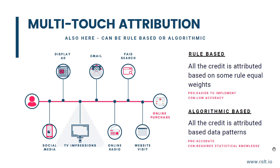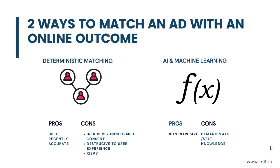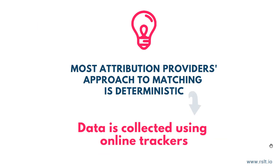By now you're probably wondering how the data is collected in order to attribute in the first place. There are two different ways. The first is deterministic matching, which leverages online trackers. In simple words, data is collected through uninformed consent, and until recently was highly accurate. The second approach is through machine learning. While the accuracy level can be very high, it demands deep statistical knowledge and a highly experienced professional to achieve it. Most attribution providers' approach to matching is deterministic.